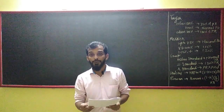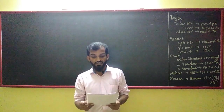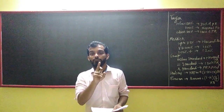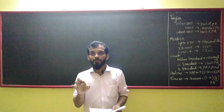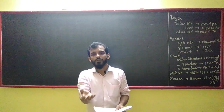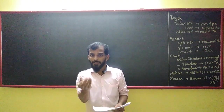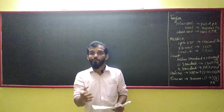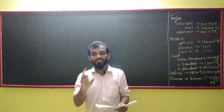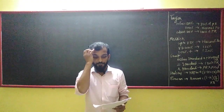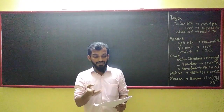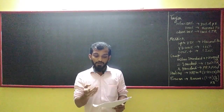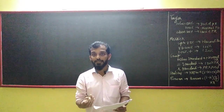Let us see: standard production rate is 20 units per hour, and the general wage rate is ₹2 per hour. Please do not skip the video — it is a short video, at most 7 minutes. Mr. A and Mr. B produce 150 units and 200 units respectively in 8 hours.